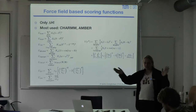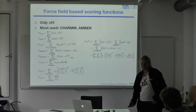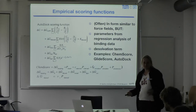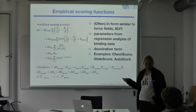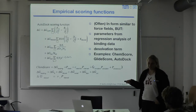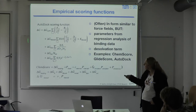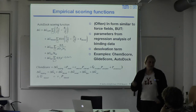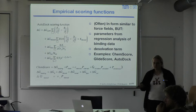An alternative to physics-based parameterization is to observe what you find in protein interactions, collect parameters from binding data, and do a regression analysis to find all parameters. This is more tailored towards protein-relevant interactions. These empirical scoring functions introduce terms to capture entropy, for example terms for buried surface area. Otherwise, scoring functions look pretty similar to the force fields described before.